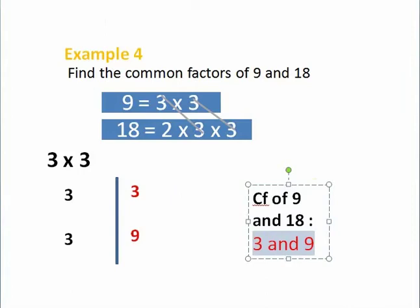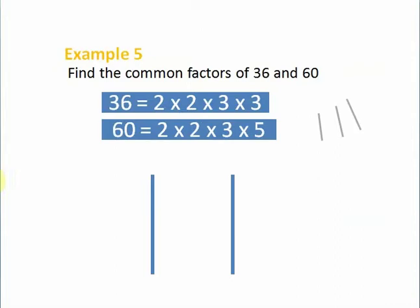Example 5: Here we have to find the common factors of 36 and 60. Let's see what is common. Next one we have, it's over and done. We can pick it. So we have 3 and 3, we have 3 and 3. Yes, we could also pick this 3 and this 3.